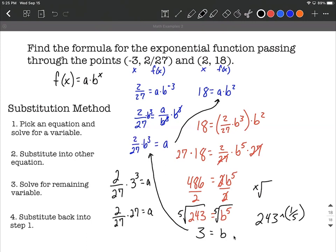As we simplify that down, we have two twenty-sevenths multiplied by twenty-seven. The twenty-sevenths can cancel each other out. We're left with a equals two. So at this point, we have both a and b.